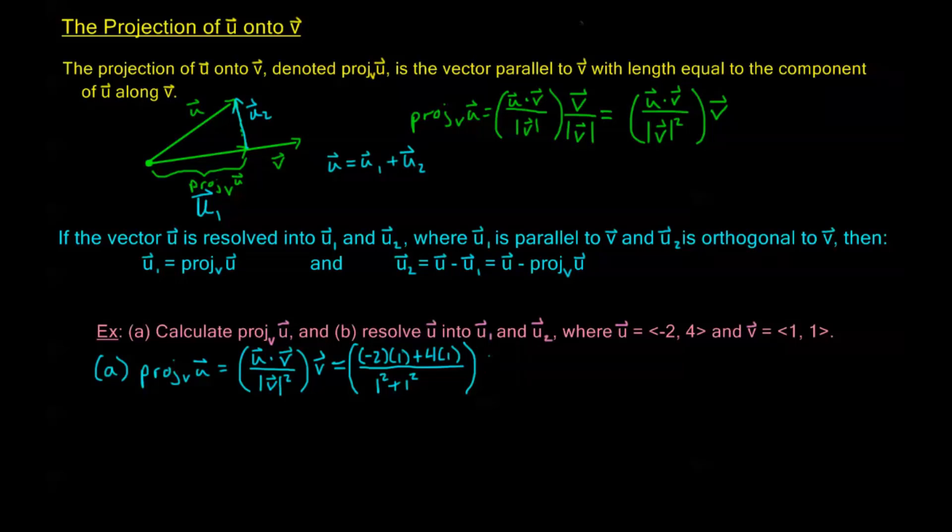Then I need to multiply this through the vector v, scalar multiplication. My scalar becomes -2 + 4 which is 2 over 2. So I have 2 over 2 times v, or simply v. So the projection of u onto v is actually going to be v.